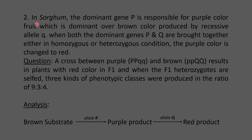The second example is fruit color inheritance in sorghum. The dominant gene P is responsible for purple color fruit, dominant over brown color produced by recessive allele Q. When both dominant genes P and Q are brought together in either homozygous or heterozygous condition, the purple color changes to red. A cross between purple and brown results in plants with red color in F1 generation, and when the F1 heterozygotes are selfed, three phenotypic classes are produced in the ratio 9:3:4.